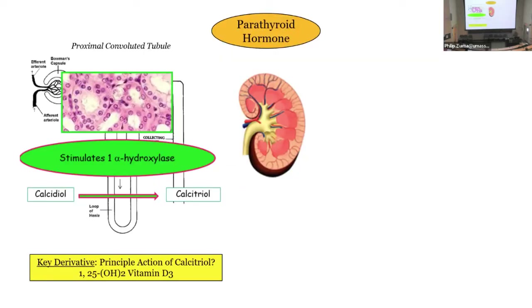That's what PTH does in the proximal convoluted tubule — it interferes with phosphate absorption. The other thing: where is 1-alpha hydroxylase? It resides in the proximal convoluted tubule cells. Parathyroid directly increases the level of 1-alpha hydroxylase. What does 1-alpha hydroxylase do? It converts calcidiol to calcitriol — 25-hydroxy to 1,25-dihydroxy vitamin D — and that's going to be the active form of the hormone.